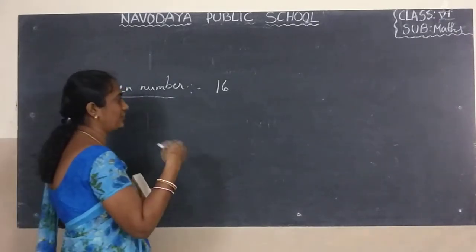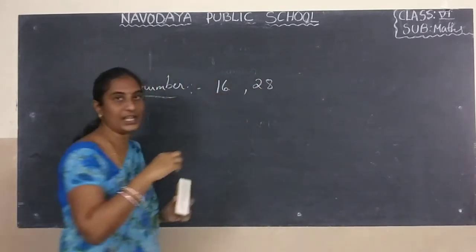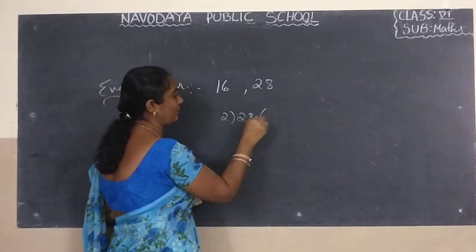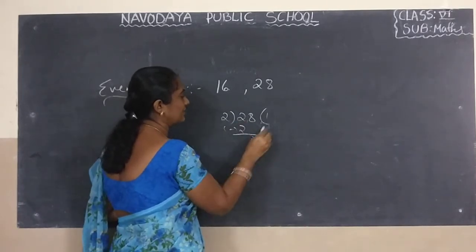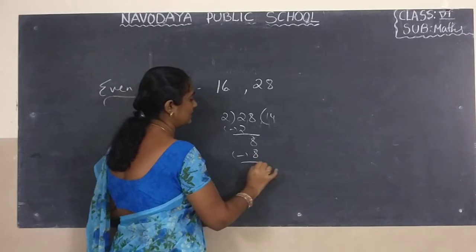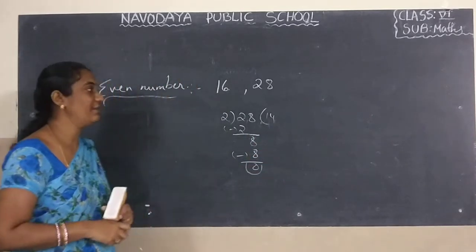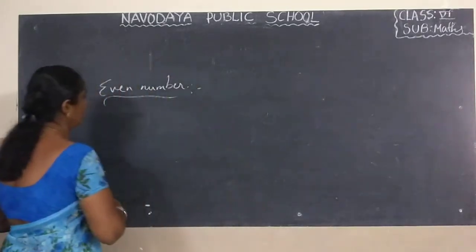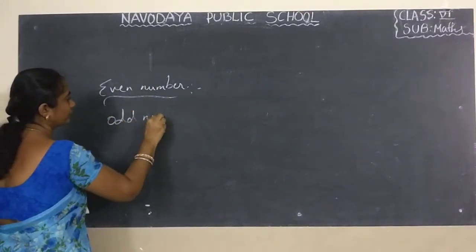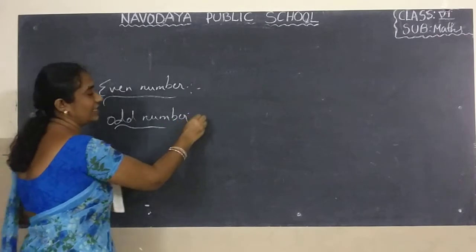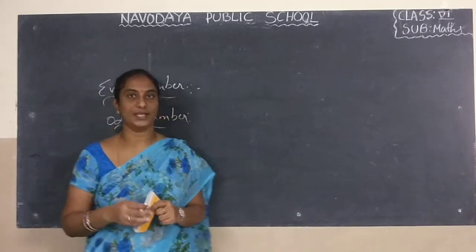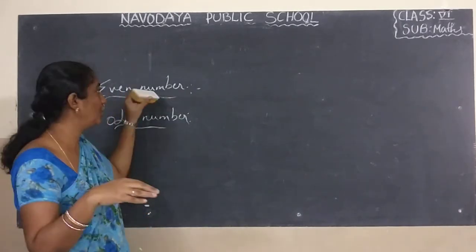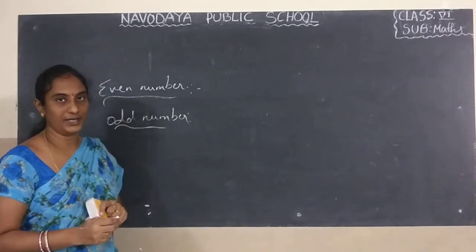For example, take 28 — 28 is also divisible by 2. Check: 2 divided into 28 gives 14 with remainder 0. So it is divisible by 2. Numbers which are divisible by 2 are called even numbers. Numbers which are not divisible by 2 are called odd numbers.